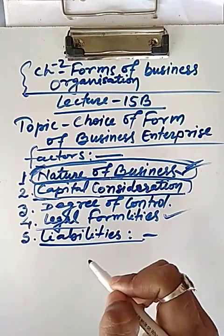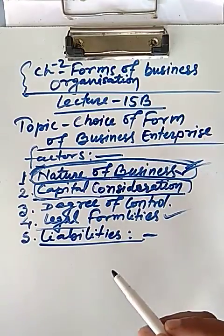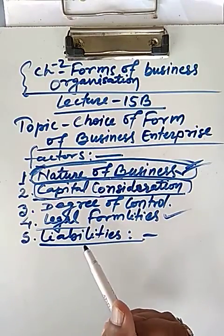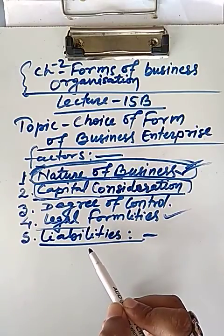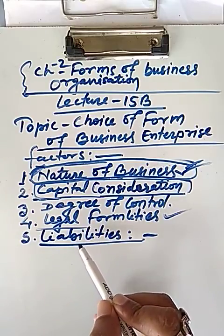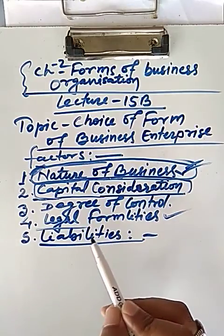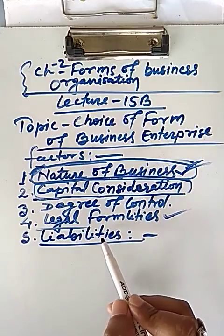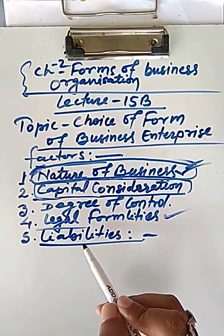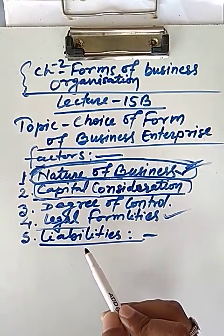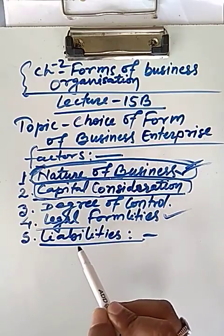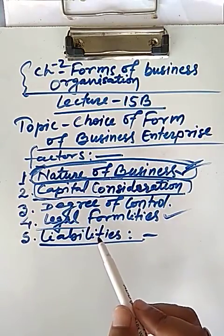The fifth factor is liability. Another important factor which helps in selecting the form of business enterprise is the degree of risk involved. For high-risk ventures, people prefer company form or cooperative organization because the liability of members is limited. Because of unlimited liability, people avoid sole proprietorship and partnership form of business, as these forms are suitable for less risky ventures.